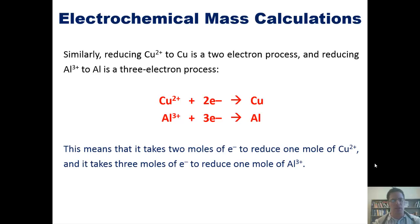This means then that it takes two moles of electrons to reduce one mole of copper 2+, and it takes three moles of electrons to reduce one mole of aluminum 3+. Make sense? Okay, good.